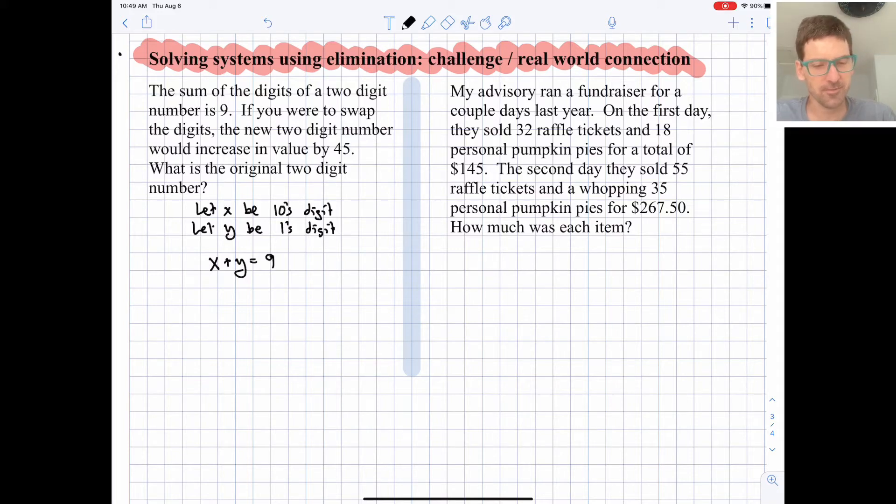So one thing you can think about when we're doing problems like this is what is 10x plus y equal to? x is in the tens place, so the actual numerical value that it represents is 10 times whatever the digit is. y is in the unit place, in the ones digit place, so its numerical value is just itself.